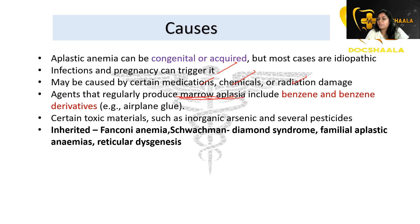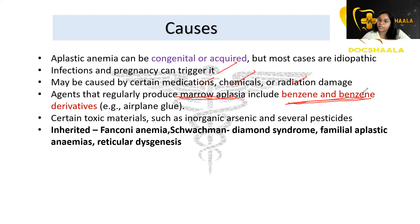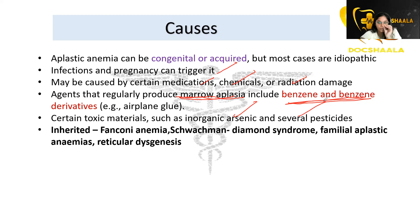The most common agent that produces marrow aplasia is benzene and benzene derivatives — found, for example, in airplane glue. Patients may be exposed to benzene derivatives and other toxic materials such as inorganic arsenic and several pesticides, which can also lead to aplasia.